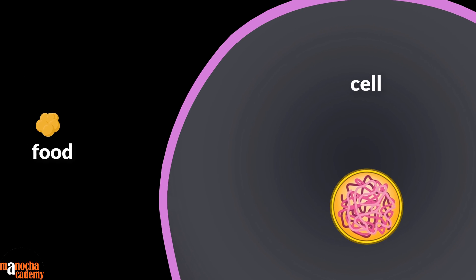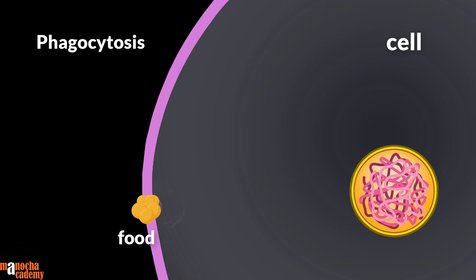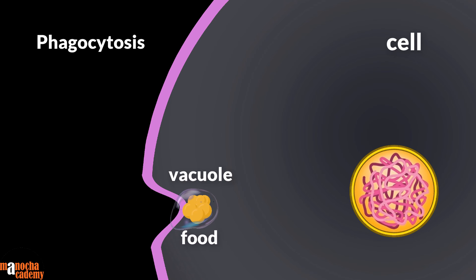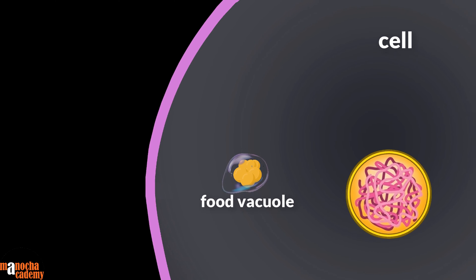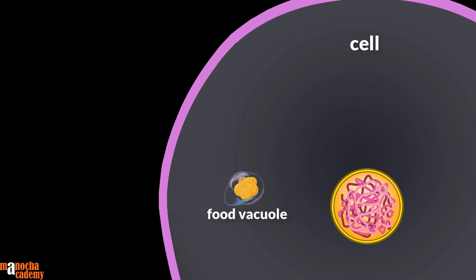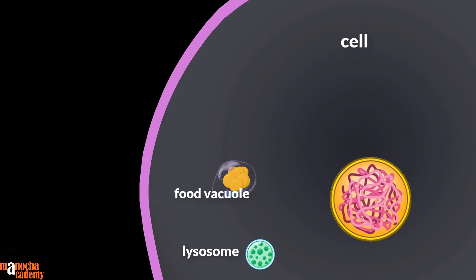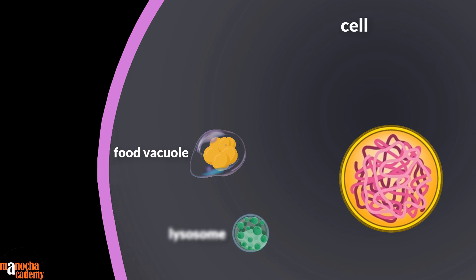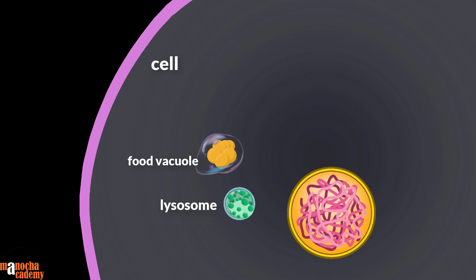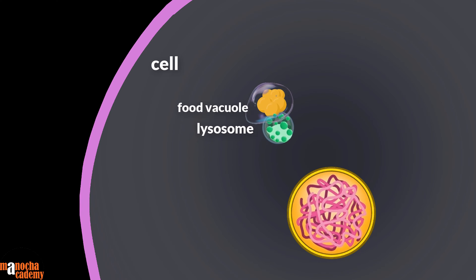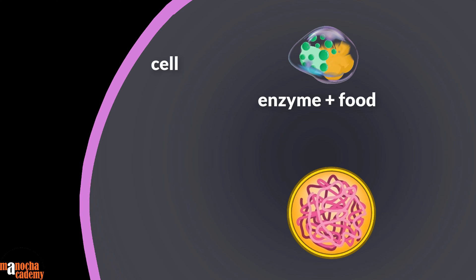When a cell carries out phagocytosis and engulfs food, it takes the food inside a vacuole called a phagosome or food vacuole. The food vacuole contains food that needs to be digested using acid hydrolases. The food vacuole and the primary lysosome fuse to form a single vacuole — containing both enzyme and food in a membrane-bound system — known as the secondary lysosome.